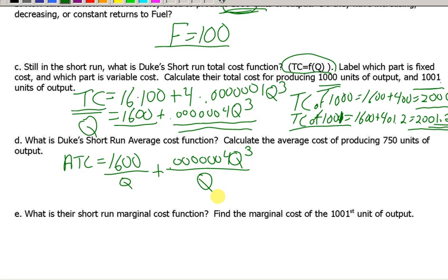0.00004 cubed over Q. And so, one of those Q's is going to cancel and you'll get Q squared there. Now, that gives us an easy function. I can just change that to a squared. Scratch that out. Now, we have an easy function to calculate the average total cost. Just plug in 750 into this function and see what you get. And I just plugged in 750 for here and here. And I got about $2.36 is the average variable cost in the short-run when we're producing 750 units of output.